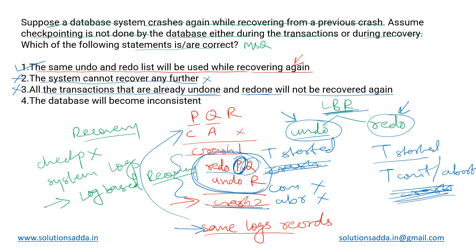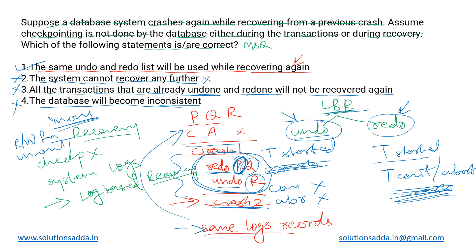Option four says the database will be in an inconsistent state — this is also incorrect. Inconsistency occurs when the same variable takes two or more values in different transactions. Here, we are not reading or writing anything from uncommitted transactions; we are simply redoing or undoing based on the log records stored before Crash 1. There is no chance of inconsistency because there is no read from uncommitted transactions, so the system will be in a consistent state. The only correct answer is option one.